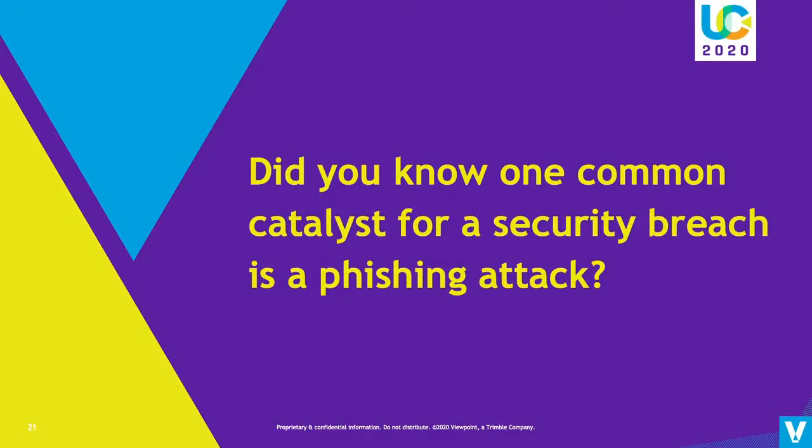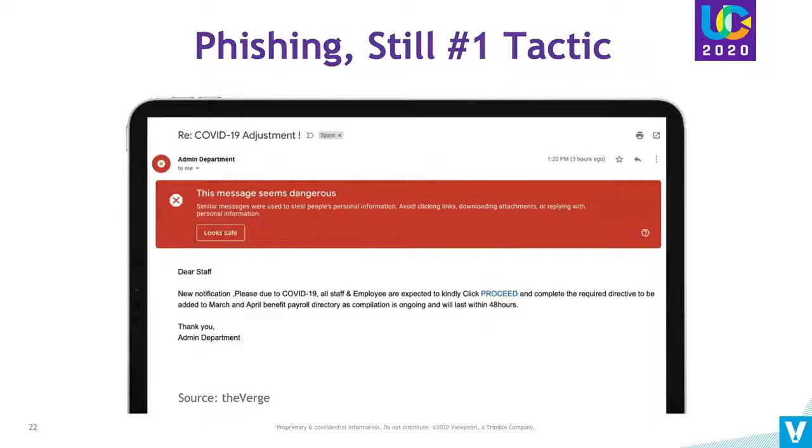One common catalyst for a security breach is phishing attacks — the most common type. Phishing is when scammers pretend to be affiliated with the recipient's employer. These attackers are getting much better and more accurate at making phishing harder to detect. They're also expanding to text messages and vishing — where you receive a voice call that samples someone's voice you know and uses a recording to tell you to take an action, usually an urgent request from someone in power, like an executive.